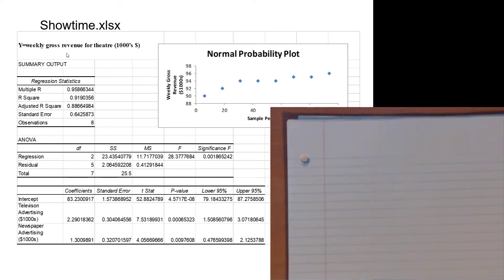Standard error of the estimate - the model is in thousands of dollars, so the standard error is about 642 or 643 bucks. If we make an estimate, we'd expect the actual number to fall plus or minus 642 bucks roughly 68 percent of the time, and about 95 percent of the time the actual observation will be within about 1300 bucks of our estimate.